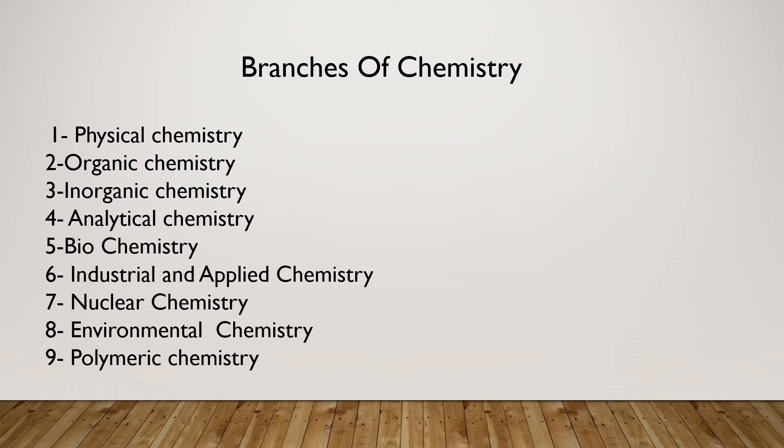Industrial chemistry or applied chemistry. It is a branch of chemistry that deals with the study of different chemical processes. For example, the making up of glass, cement, paper, fertilizers, certain medicines. They all involve chemical processes. And we study these chemical processes in industrial or applied chemistry.